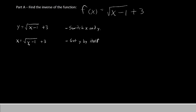This plus 3 is not really attached to the y, so that seems to be a good candidate. So we'll subtract 3 from both sides. The 3s on the right cancel out, and on the left we'll have x minus 3 equals the square root of (y minus 1).